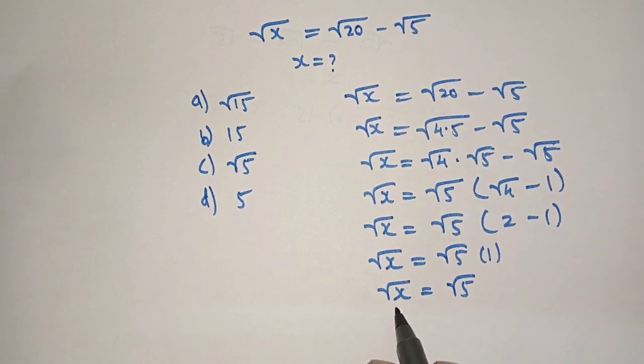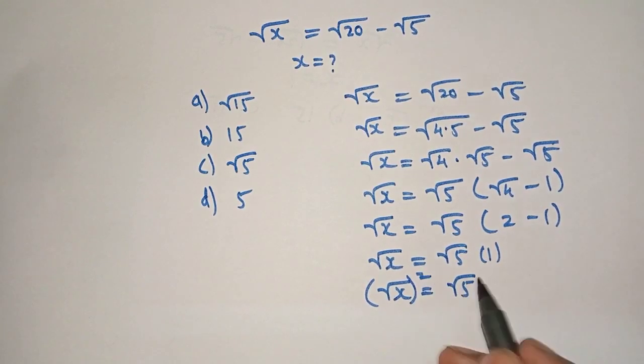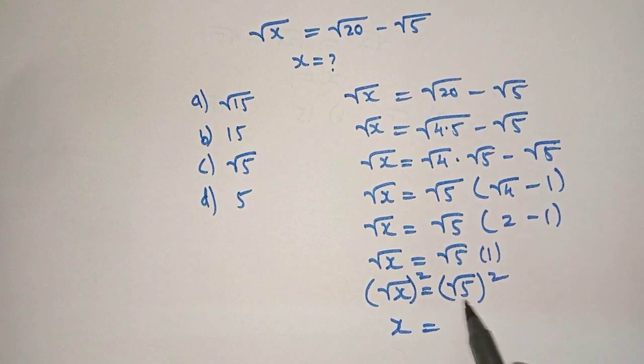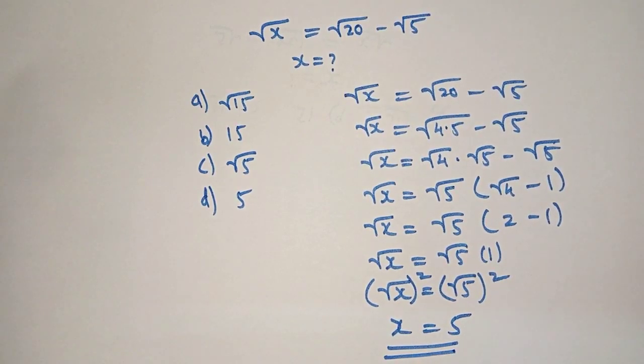Now, we have to find the value of x, so we square both the sides. Therefore, square root of x the whole square is equal to x, and square root of 5 the whole square is equal to 5, which is our right answer. Option D is our right answer.